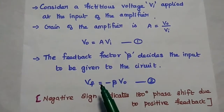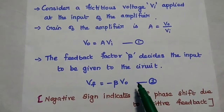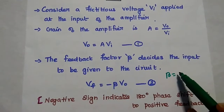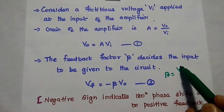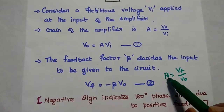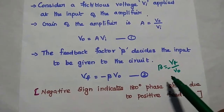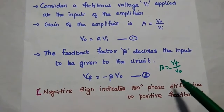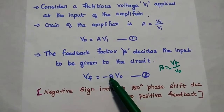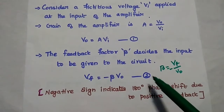The feedback factor beta decides the input to be given to the amplifier. VF is equal to minus beta times VO. As we know, beta is the gain of the feedback network, equal to output over input. Here the input is VO and the output is VF. The minus sign indicates the 180 degree phase shift due to the positive feedback. So VF equals minus beta times VO. Consider this as the second equation.